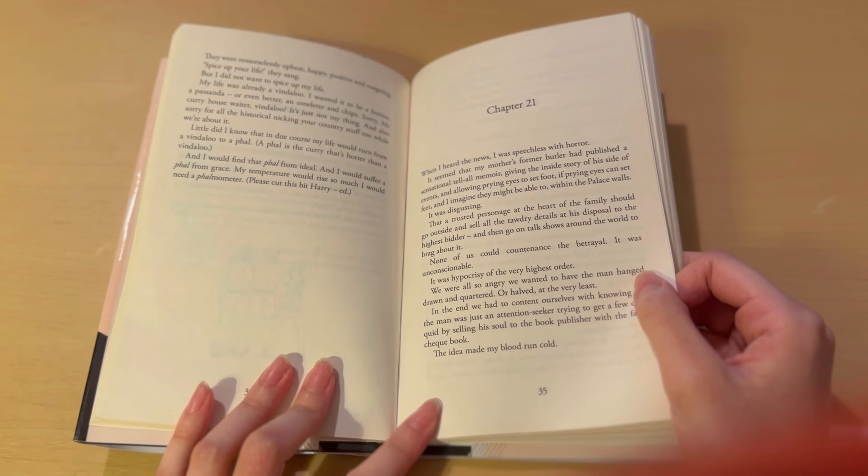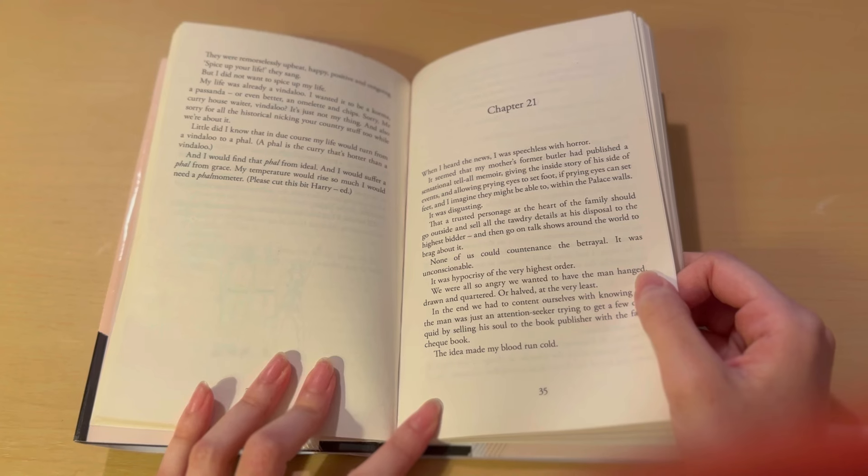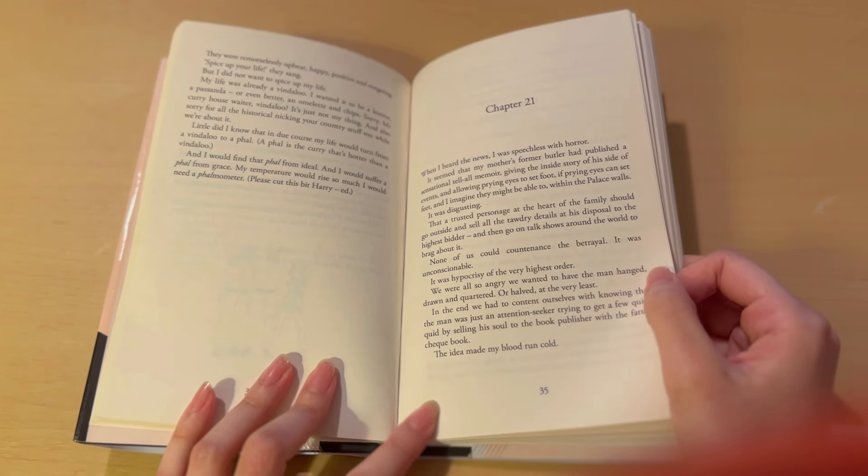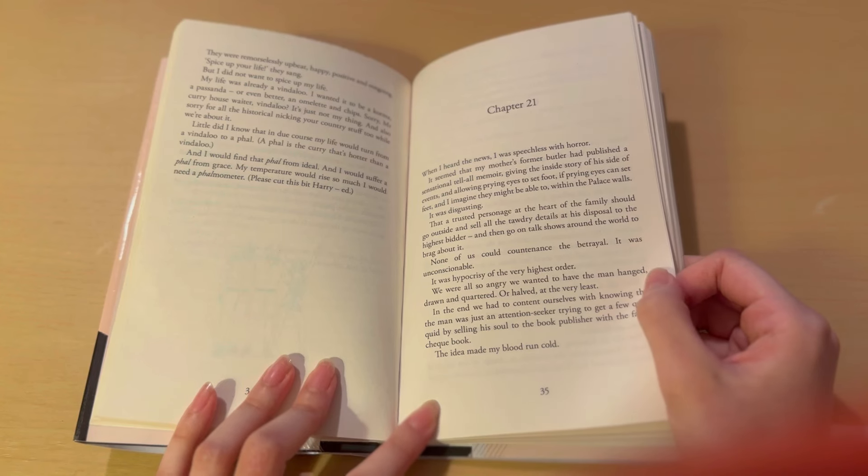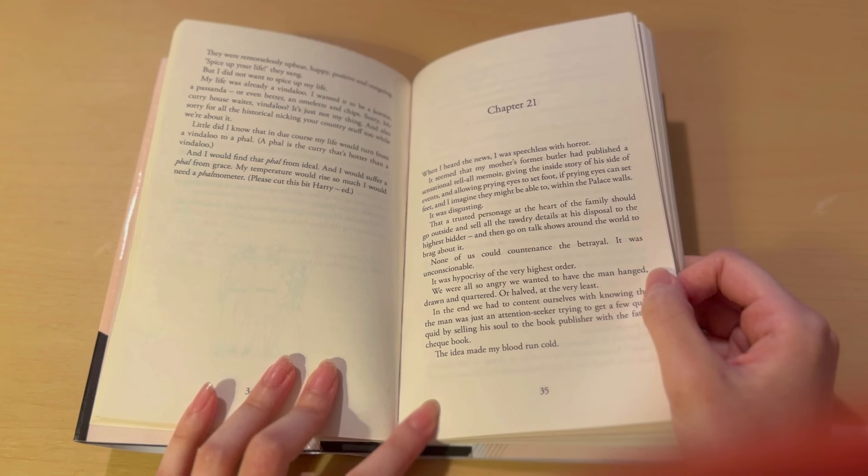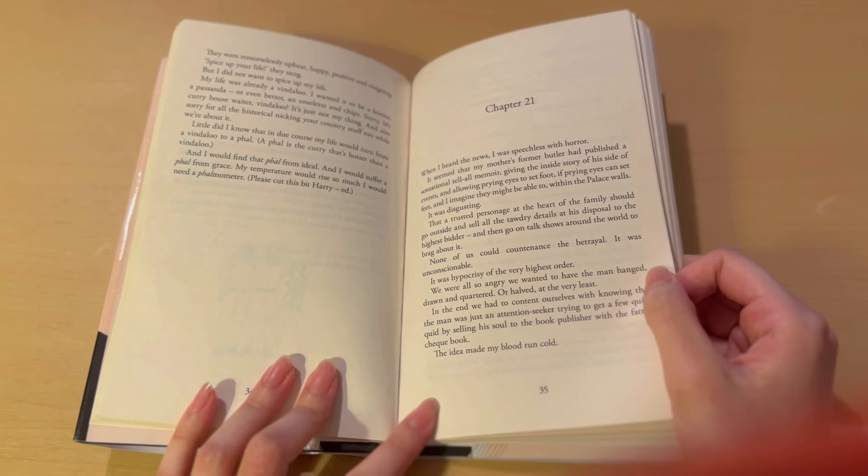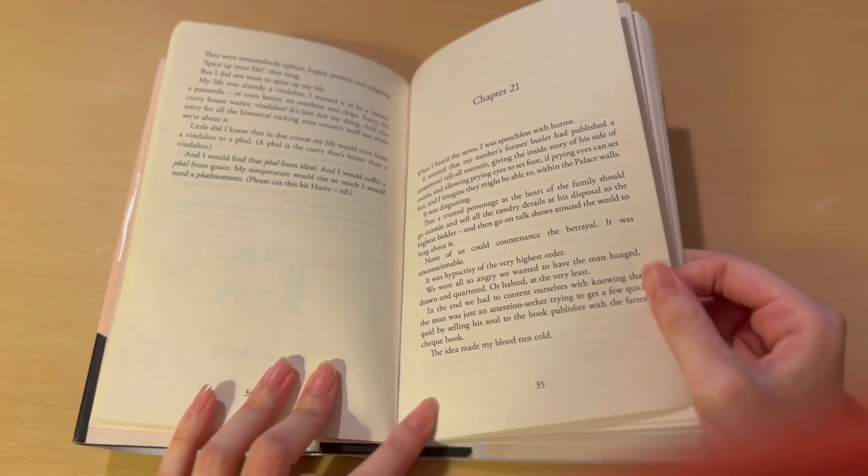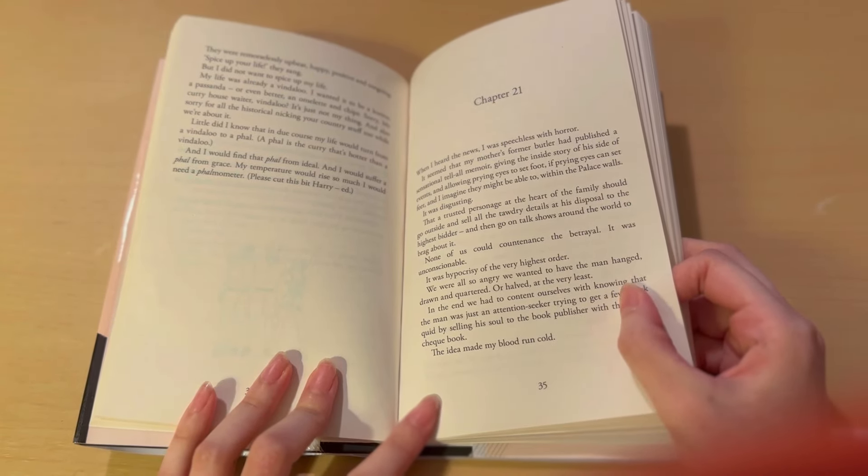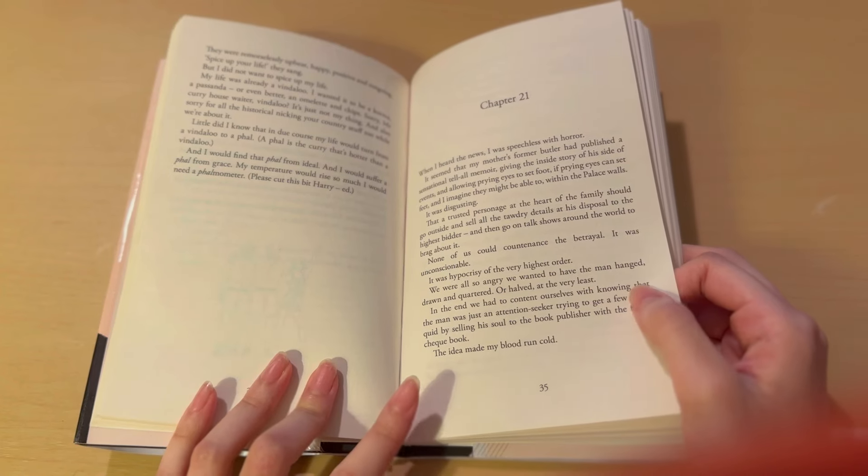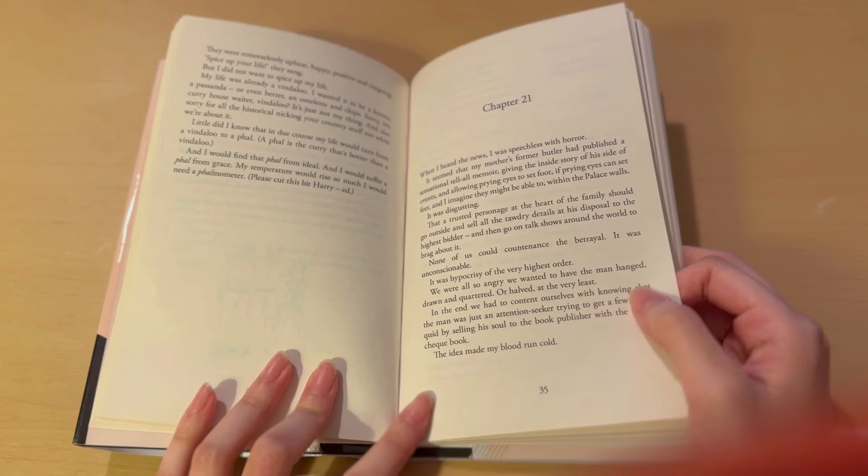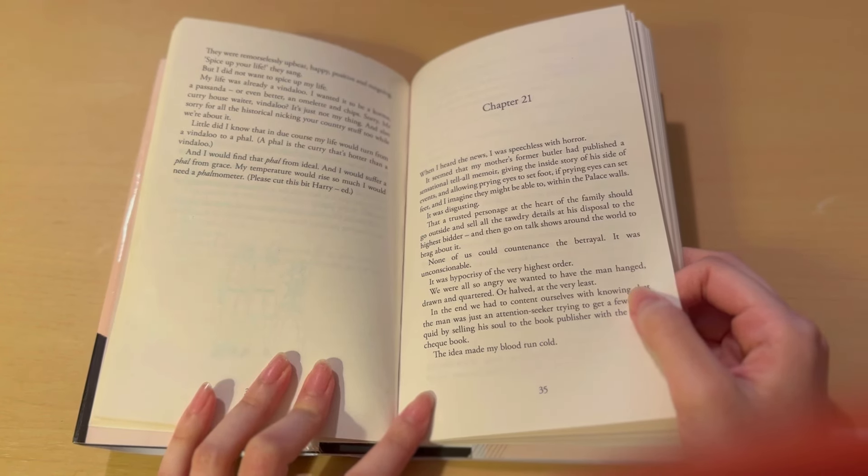Sorry, Mr. Curry House waiter. Vindaloo is just not my thing. And also, sorry for all the historical nicking your country stuff. Little did I know that in due course, my life would turn from a Vindaloo to a Phall. A Phall is the curry that's hotter than a Vindaloo. And I would find that Phall from a dial. Oh my gosh. That sounds like a pun that Harry would definitely make. And I would suffer a Phall from Grace. My temperature would rise so much that I would need a Phallometer. Please cut this bit, Harry.